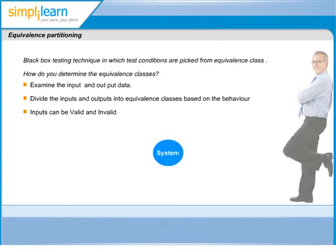If a system accepts date of birth as an input and gives age as an output, we can identify classes as follows. The first valid input class will be date is greater than zero, which will generate a valid output that is greater than zero. The second invalid class will be date is less than zero. For this invalid input, the output class will generate an error message.